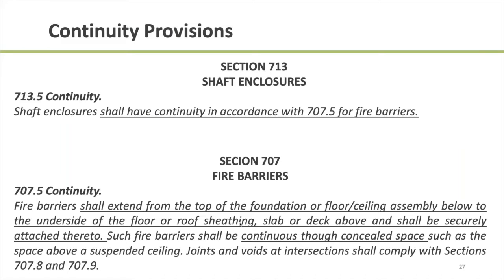Let's jump back into Chapter 7, Sections 713 and 707. We talked through fire resistance ratings and permitted materials. The next section is continuity — specifically, to what extent does a fire barrier and a shaft wall need to extend in a given floor-to-floor height. Looking at Section 707.5, we're extending fire barriers from the top of the foundation or floor-ceiling below to the underside of the floor or roof sheathing, slab, or deck above, and securely attached to those.